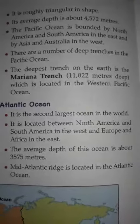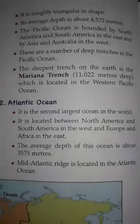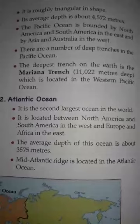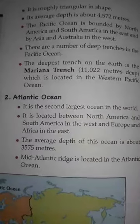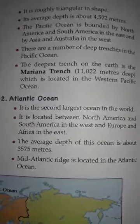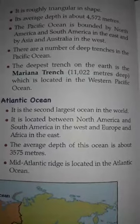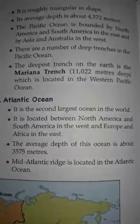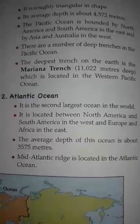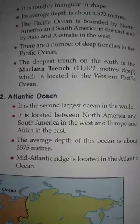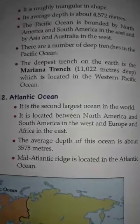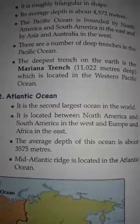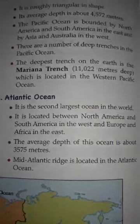The second largest ocean is the Atlantic Ocean. It is located between North America and South America in the west and Africa and Europe in the east. Many rivers drain into this ocean such as the Rhine, Senegal, Niger, Congo, Amazon, Mississippi, Orinoco, and La Plata.